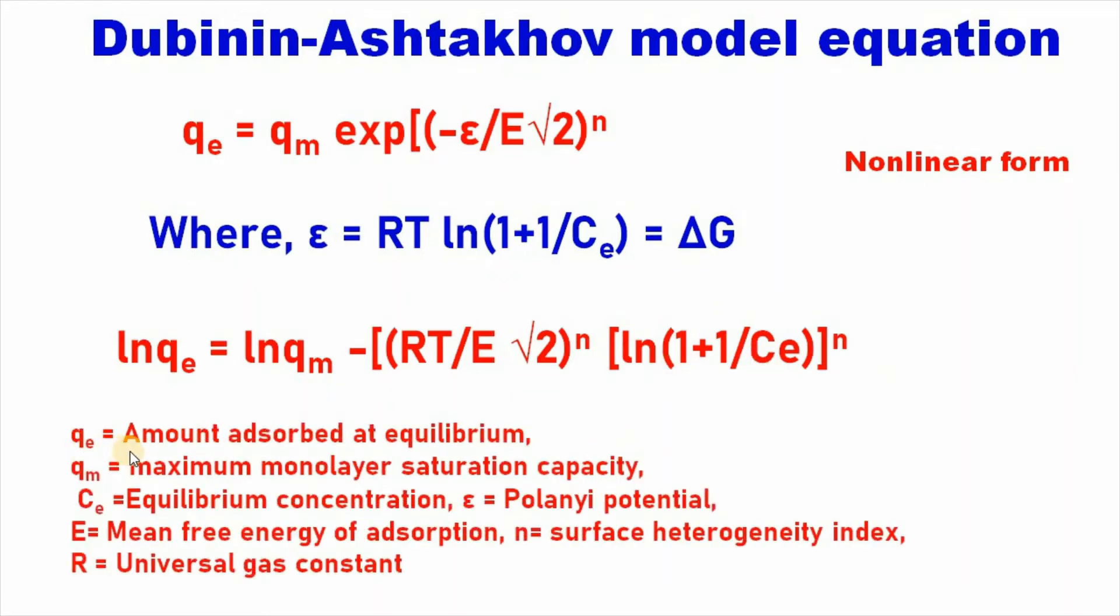Where q is the amount adsorbed at equilibrium, qm equal to maximum monolayer saturation capacity, C equal to equilibrium concentration, epsilon equal to Polanyi potential, E equal to mean free energy of adsorption, n equal to surface heterogeneity index, R equal to universal gas constant.